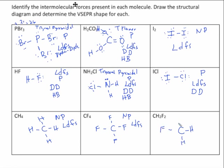CH2F2: if you draw this one, you can see that it is polar, because when the four substituents on a tetrahedral molecule are not all the same, it becomes polar. Everything has London dispersion forces. Because it's polar, it also has dipole-dipole. Can it hydrogen bond? Is there a hydrogen bonded to an oxygen, fluorine, or nitrogen? The answer is no, so it only has London dispersion forces and dipole-dipole.